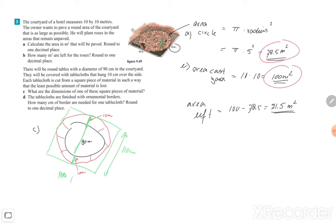Now exercise D: The tablecloths are finished with ornamental borders. How many centimeters of borders are needed for the tablecloth, rounded to one decimal place? So around the circle there will be an ornamental border.